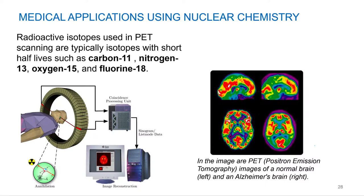Now the glucose chemically is no different. A carbon atom is a carbon atom. Your body's going to treat that glucose exactly the same way — it doesn't know anything about it. So it's going to use that glucose and distribute it exactly like any other glucose molecule.